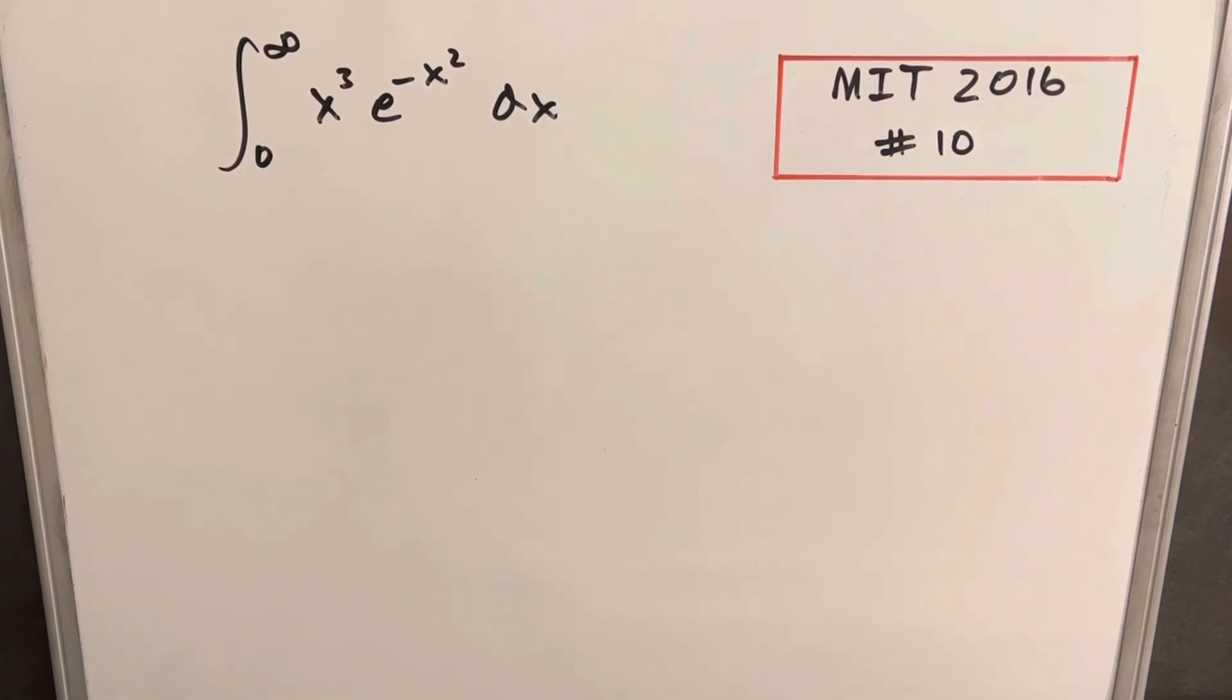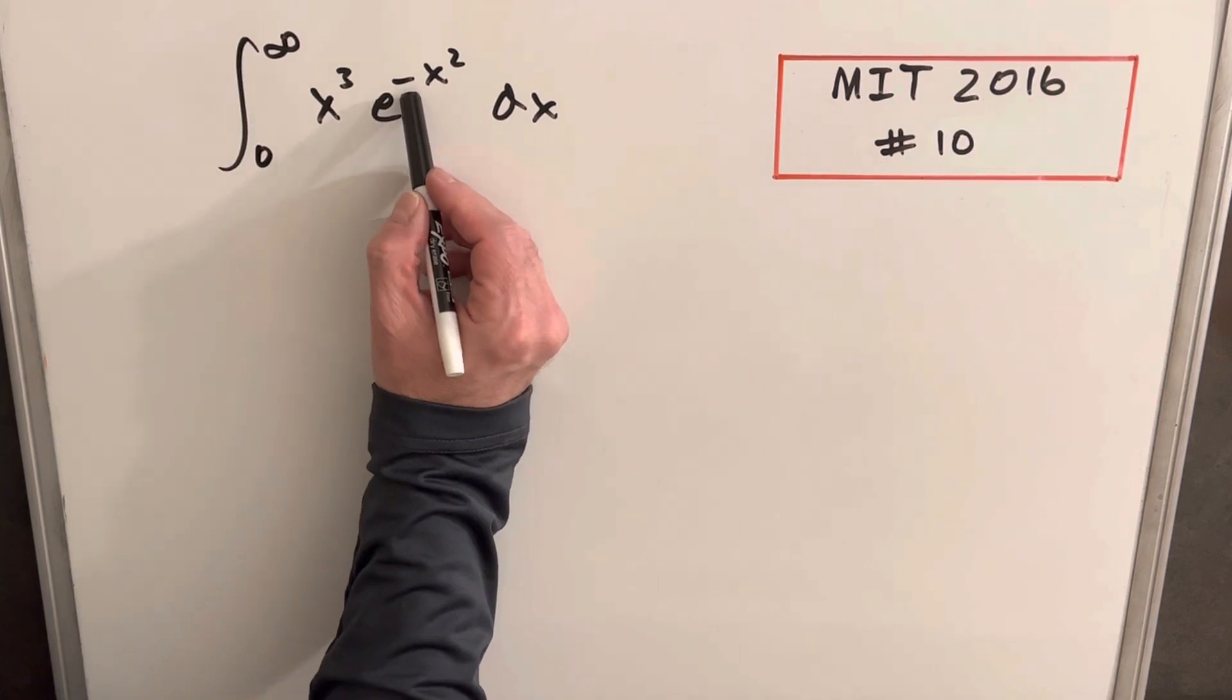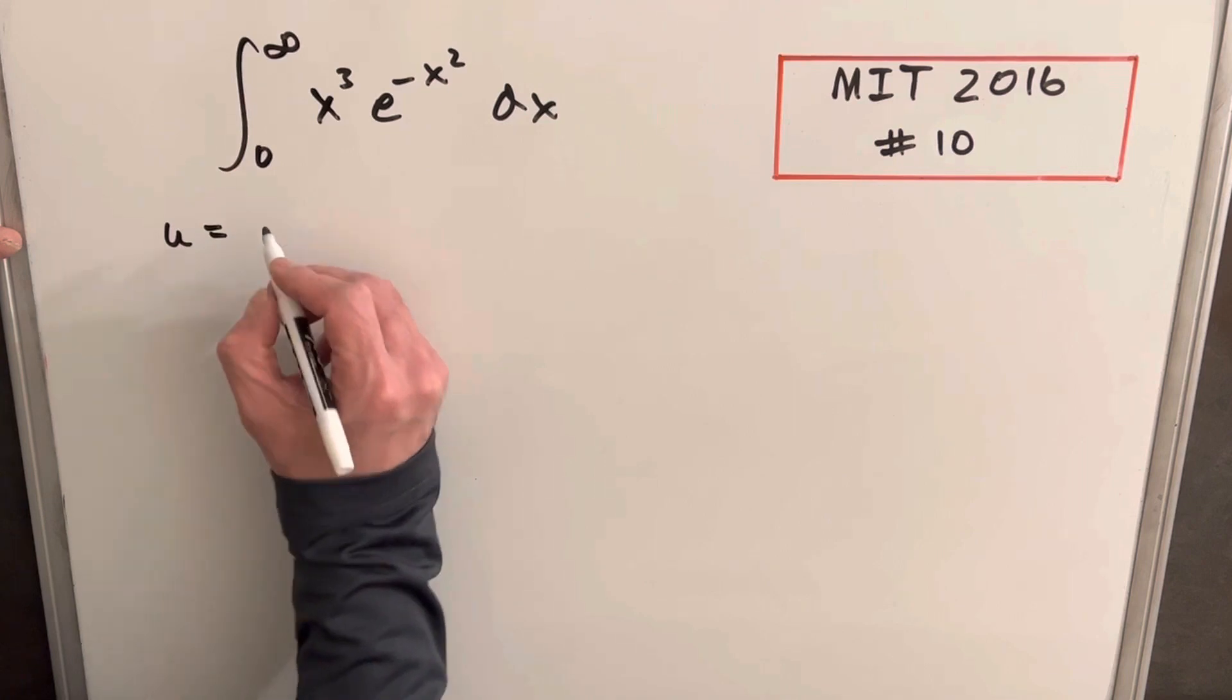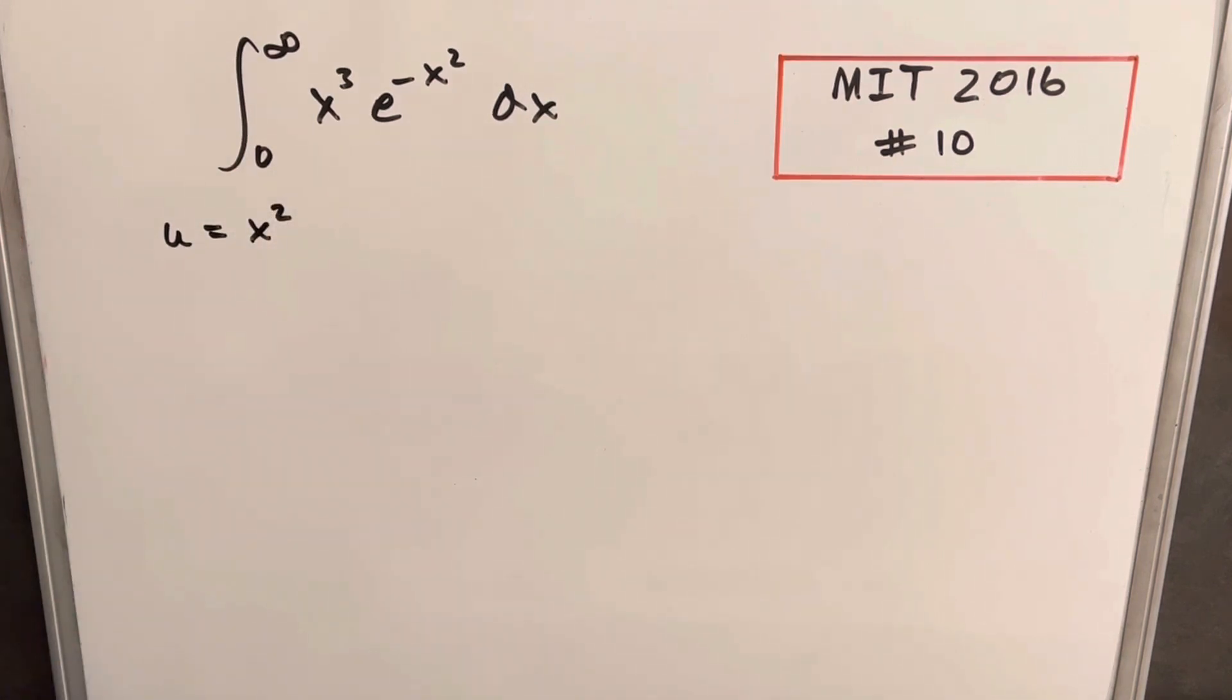So then I moved on to u substitution, and I had a couple different ways. We could call our u the whole minus x squared, but I found it actually might be better if we just say u is x squared and do it this way.